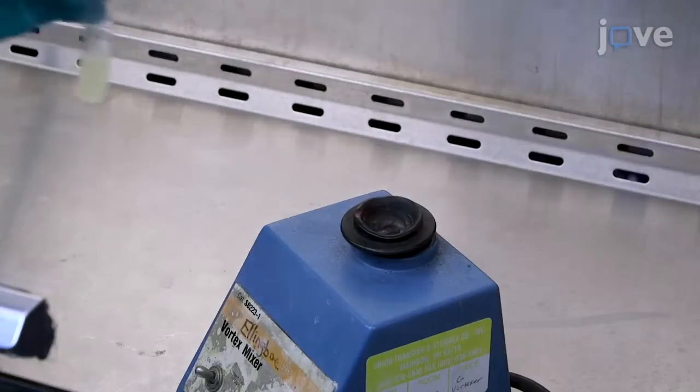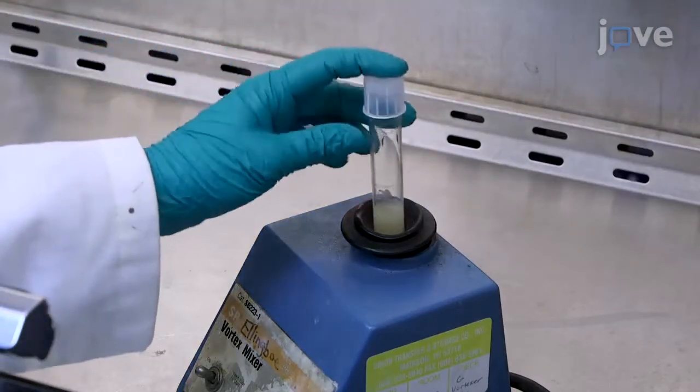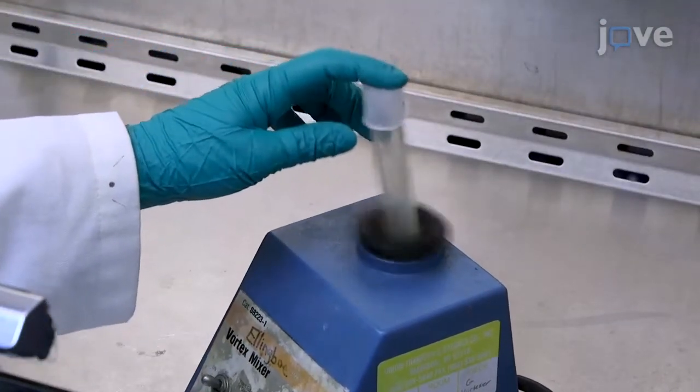Once the bacterial cultures reach an OD 600 above 1, vortex them to break up the clumps of cells.